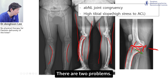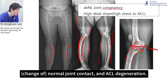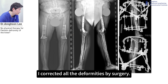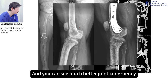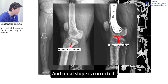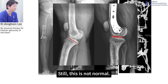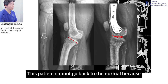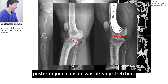There are two problems: abnormal joint contact and axial degeneration. I corrected all the deformities by surgery and you can see much better joint congruency and the tibial slope is corrected. Still, this is not normal. This patient cannot go back to normal because the posterior joint capsule is already permanently stretched.